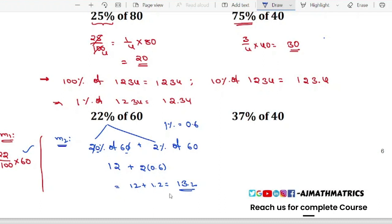So 12 plus 1.2 equals 13.2. This complete thing you can do with your mind - complete mental calculation. You should use pen and paper for 22 by 100 into 60, but for the percentage splitting method, you can do mental calculations.